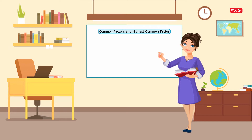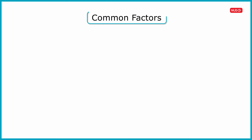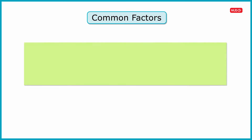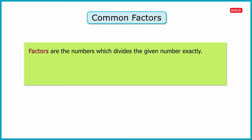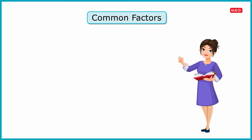Hello kids, in this video we will learn about common factors and highest common factor. Let us first understand what are common factors. As we know, factors are the numbers which divide the given number exactly. The factors that are common in two or more numbers are called the common factors of those numbers. Let us learn how to find common factors of two or more numbers.